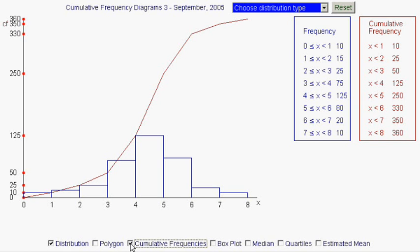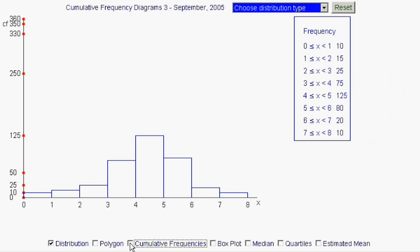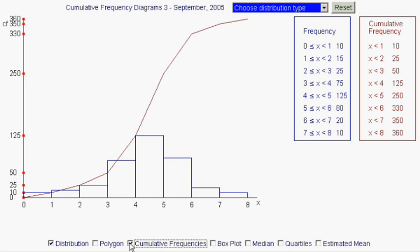So, recapping briefly, that is an ordinary frequency distribution, and these are the cumulative frequencies for the same distribution, adding the frequencies as we go along. We plot these points at the right-hand end of the interval, adding 0, 0 in this case, because we know that there's nothing less than 0. And so that gives us points which we can join together with lines to make a cumulative frequency diagram.